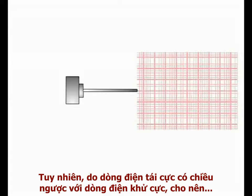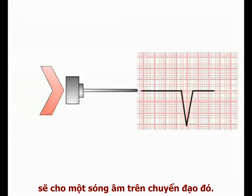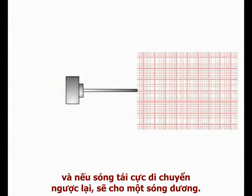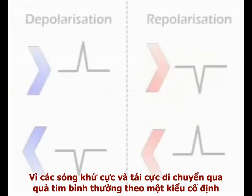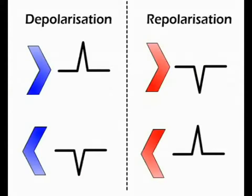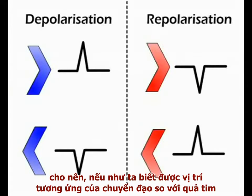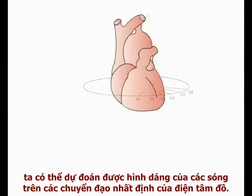In contrast, repolarising current has the opposite polarity to depolarising current. Therefore, repolarising current moving towards a lead produces a negative deflection on the paper, while repolarising current moving away from the lead produces a positive deflection. As the depolarisation and repolarisation waves spread over the normal heart in a well-defined and relatively constant pattern, these rules mean that if we know the position of an ECG lead relative to the heart, we can predict the form of readout it records.